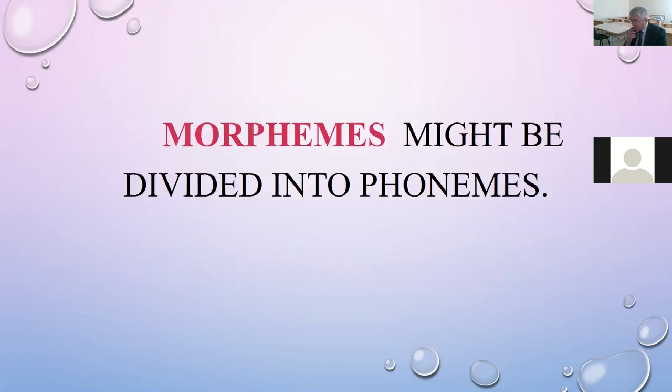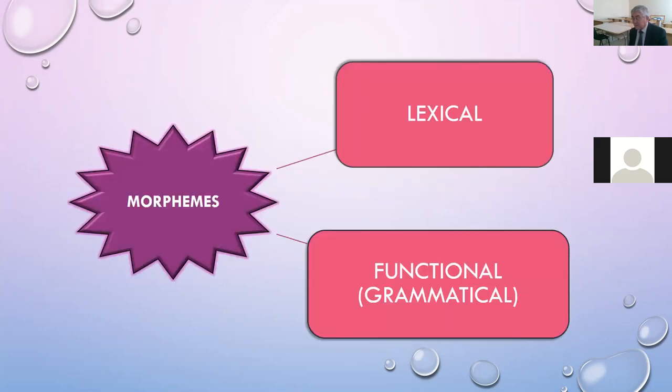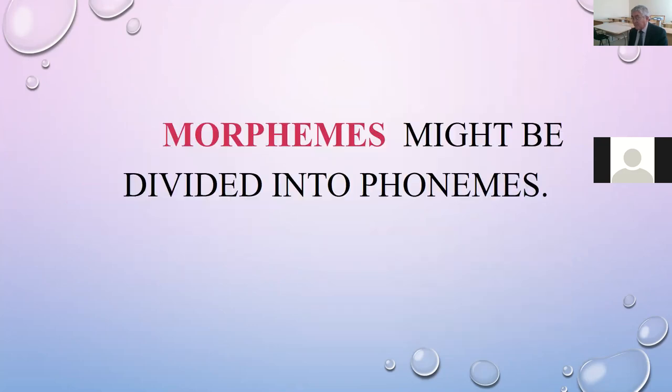Morphemes might be divided into phonemes. If we divide morphemes into phonemes, phonemes unlike morphemes have no meaning. For example, the word teacher consists of phonemes T, E, A, C, H, E, R. Phonemes are used to make up morphemes. So the difference between morpheme and phoneme is that morphemes have meaning, but phonemes have not.